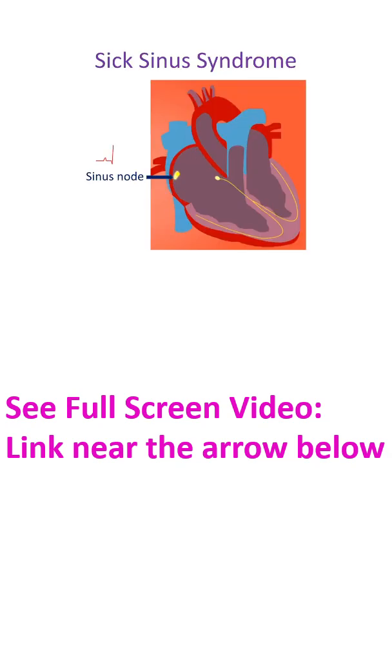Sinus node, known in short as SA node, is situated in the right upper part of the heart. Normally it gives out 60 to 100 pulses per minute so that heart beats at the same rate.